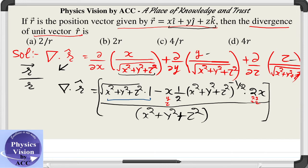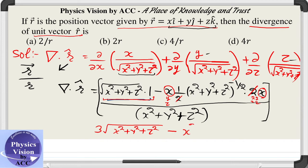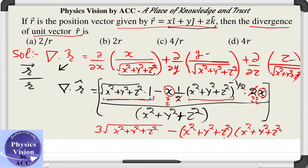When we combine all terms, the factor of 2 cancels out in each term, and finally we get 3 times the simplified expression. We can write it as: the square root of x squared plus y squared plus z squared, minus x times x giving x squared, minus y squared, minus z squared — all with a negative sign taken out of the bracket. This can be written as x squared plus y squared plus z squared to the power minus one-half.